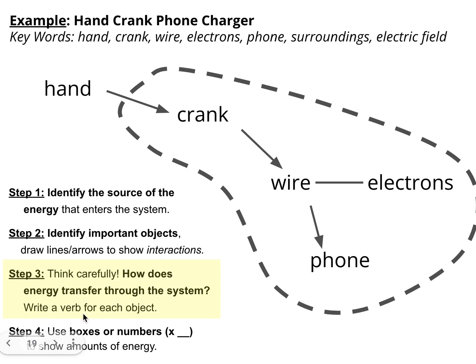The next step here that's pretty tricky is to figure out what verb might go with each object to describe what's actually happening. So for example, this is especially important for objects inside the system. If I don't have one outside the system here, that's okay. But I can tell that the crank is storing energy or transferring energy because it is moving.